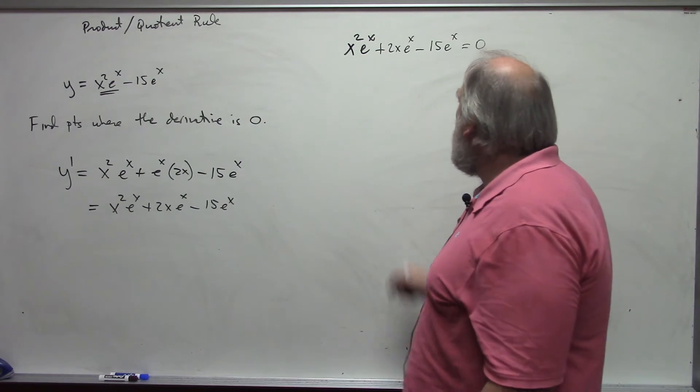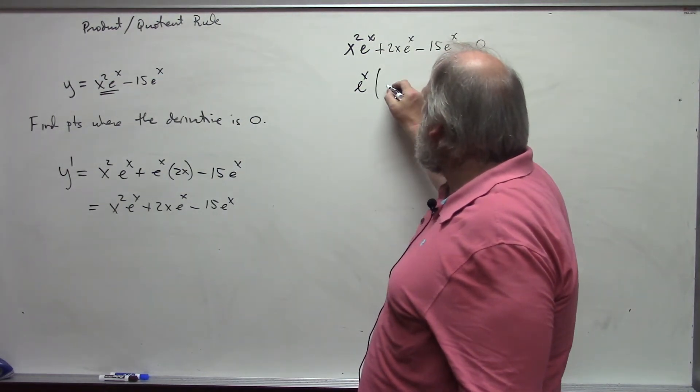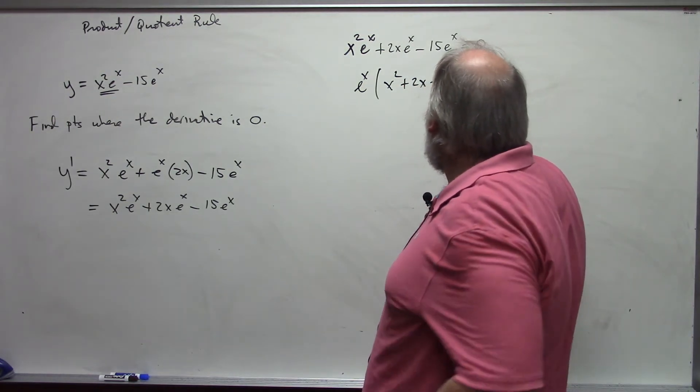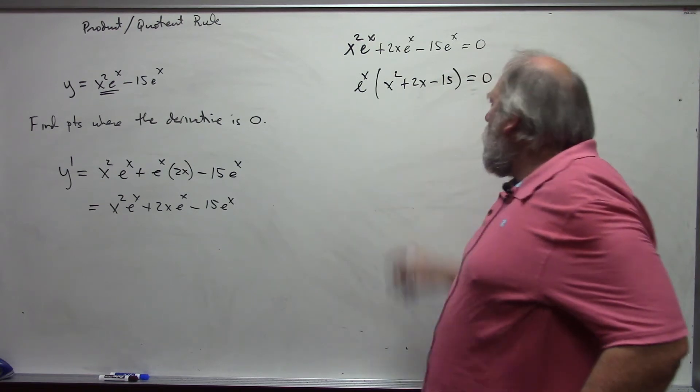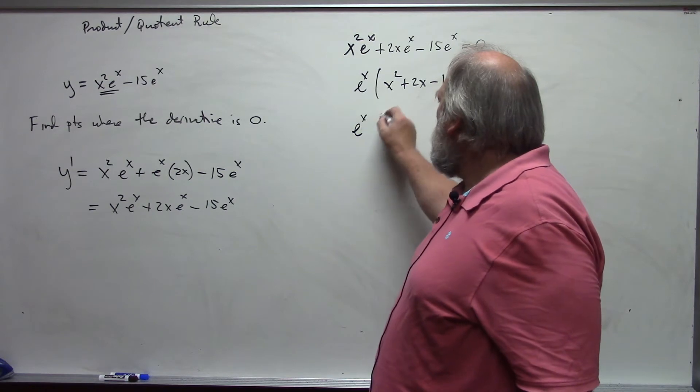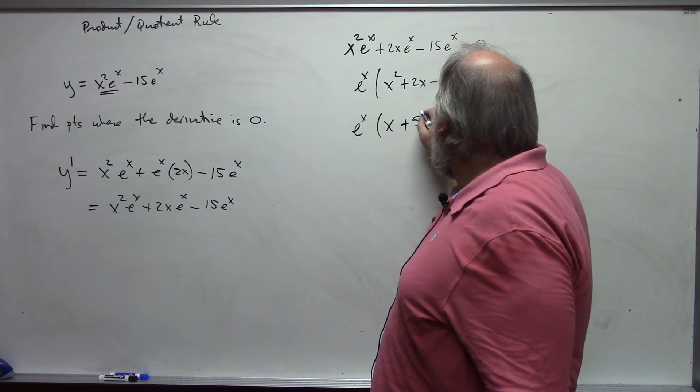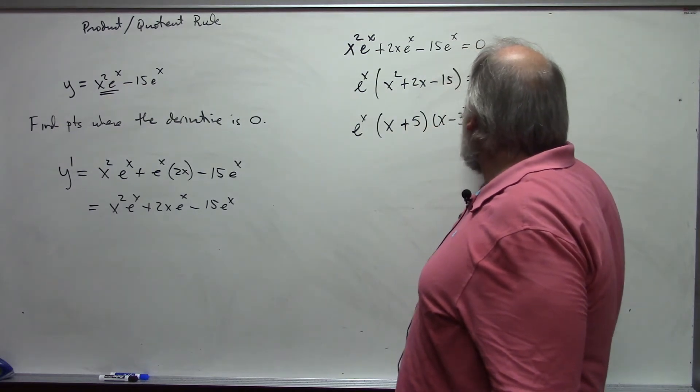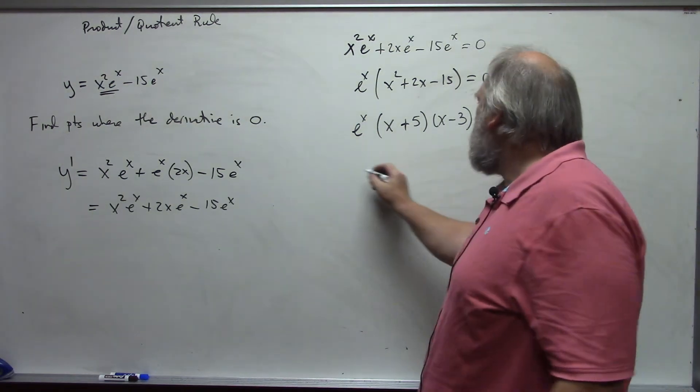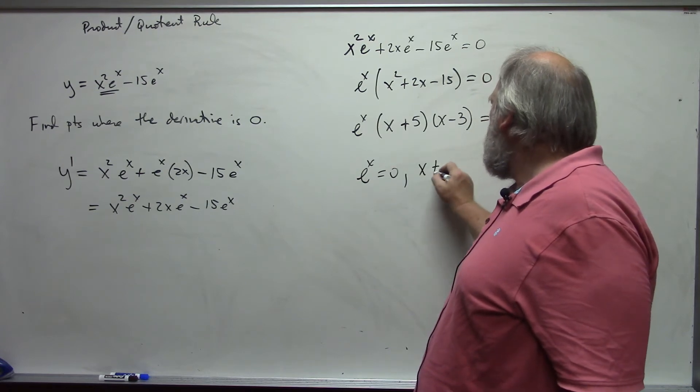And to do this, I need to factor. First, I'll factor out the e to the x. Left with x squared plus 2x minus 15. This now factors nicely, fortunately. x plus 5, x minus 3. And then at this point, we have a product equal to 0, which means that each of the individual factors would have to equal 0.